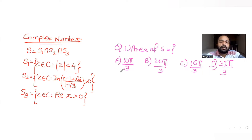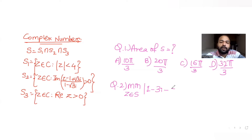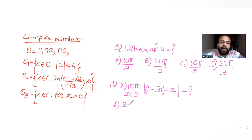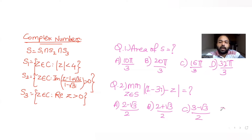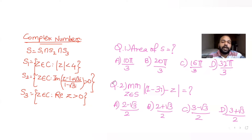The second part of the same question asks us to find the minimum distance when z belongs to the shaded region — specifically the modulus of (1 minus 3i) minus z. Basically, we need to find the distance of the point (1, −3) from z. The four options are: (2 minus root 3)/2, (2 plus root 3)/2, (3 minus root 3)/2, and a fourth option.